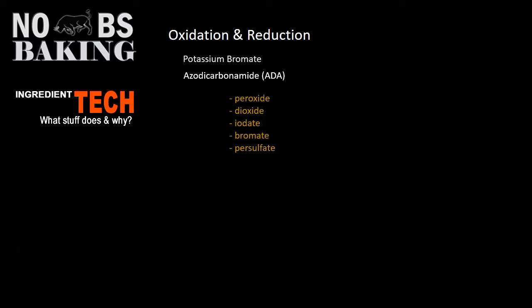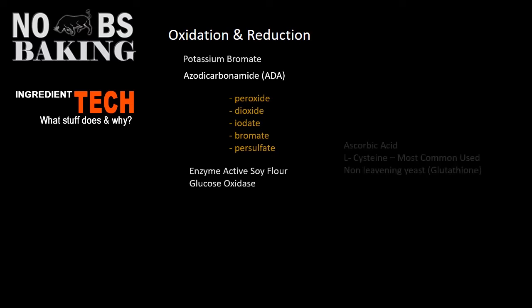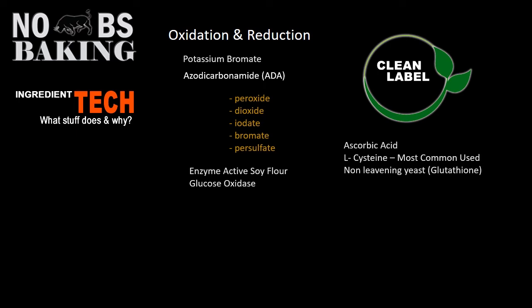As more of a clean label oxidant, I've included enzyme active soy flour and glucose oxidase, which imparts a nice white crumb, adds additional dough strength to bread dough, and are almost always from natural sources. From the reduction side, you can see the three reducing agents listed here. These are considered clean label additives and, although they're classified as reducing agents, they also can impart some oxidizing benefits and are often included in the list of oxidizing agents — such as ascorbic acid and cysteine respectively. So what do these do in a dough system, and how could I, the home baker, benefit from using some of these in my home baked bread dough? Well, let's talk about that.